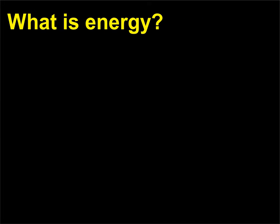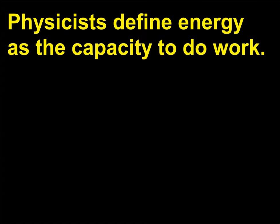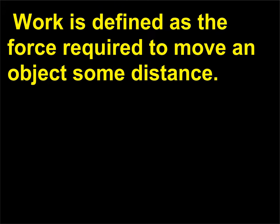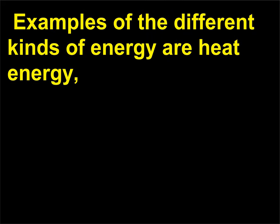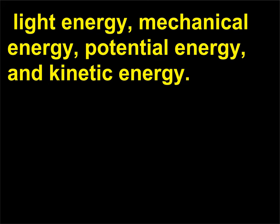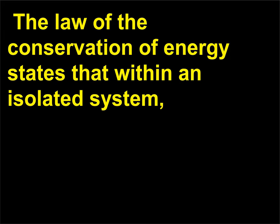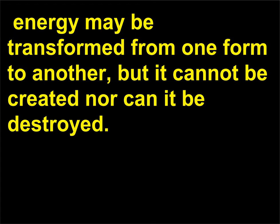What is energy? Physicists define energy as the capacity to do work. Work is defined as the force required to move an object some distance. Examples of the different kinds of energy are heat energy, light energy, mechanical energy, potential energy, and kinetic energy. The law of conservation of energy states that within an isolated system, energy may be transformed from one form to another, but it cannot be created nor can it be destroyed.